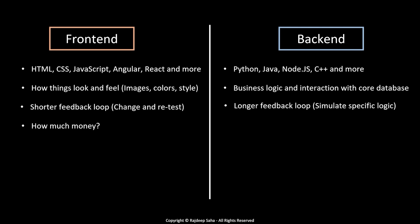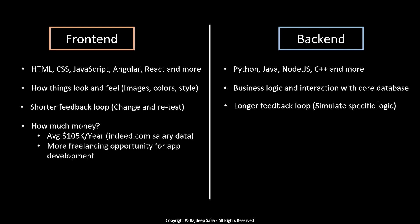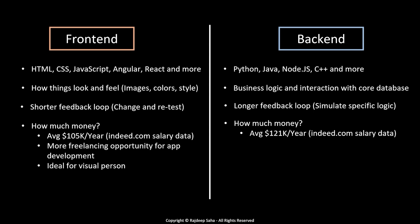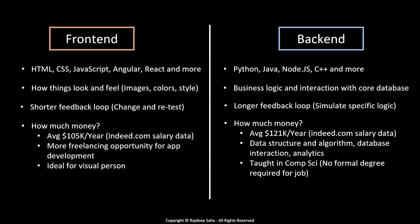Now the main question: how much money does front-end give you? The average front-end developer makes $105,000 a year — this is indeed.com salary data. Because app development is very popular these days, there are more freelancing opportunities for front-end. Front-end is ideal for a visual person who likes artistic projects and designing how things look and feel. The average back-end developer makes $121,000 a year. Back-end deals with data structures and algorithms, database interaction, analytics, etc.